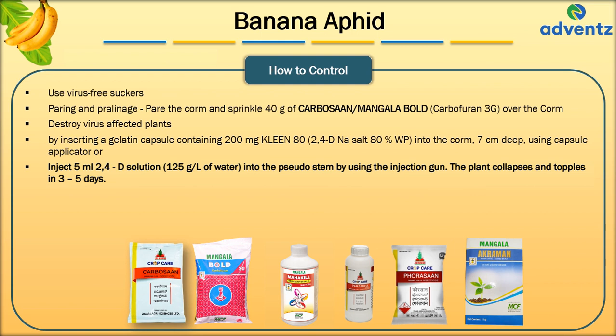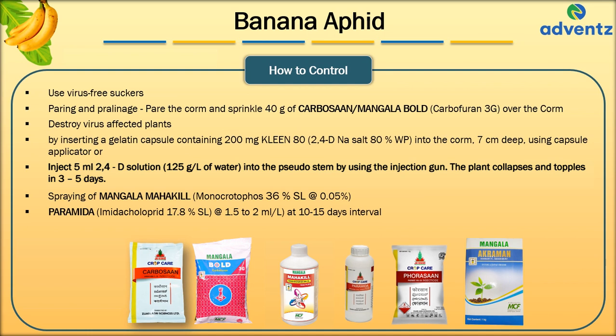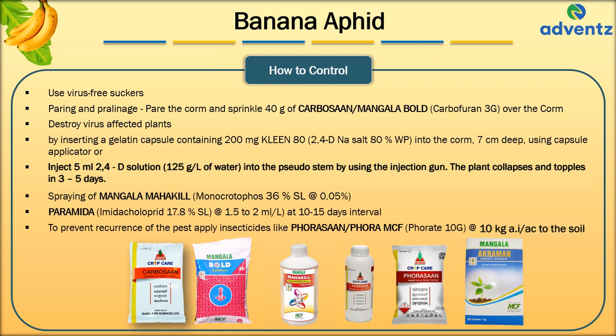Spraying of Mangala Mahakil (Monocrotophos 0.05%) or Pyramida (Imidacloprid 17.8% SL) at the rate of 1.5–2 ml per litre at 10–15 day intervals controls aphid population effectively. To prevent recurrence, granular insecticides like Forasan or Fora MCF (4,8-10G) at the rate of 10 kg AI per acre should be applied to the soil.